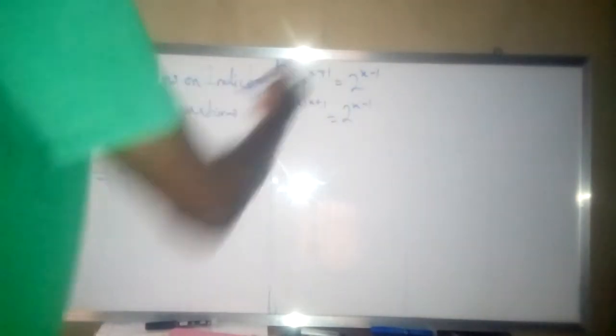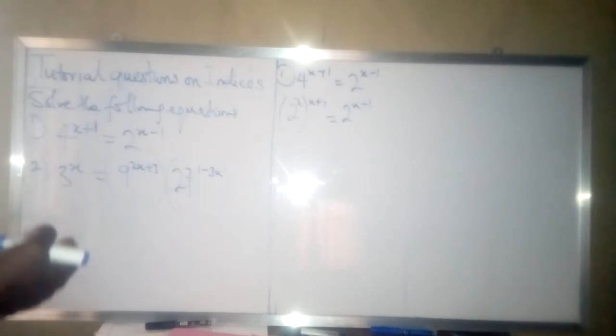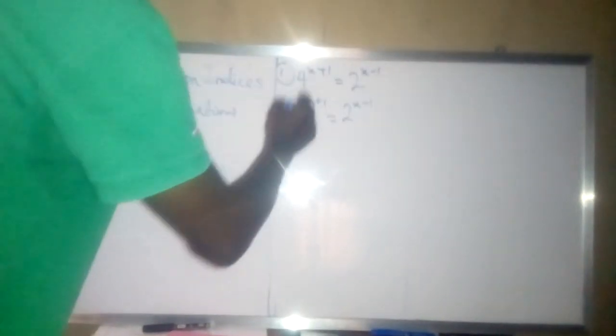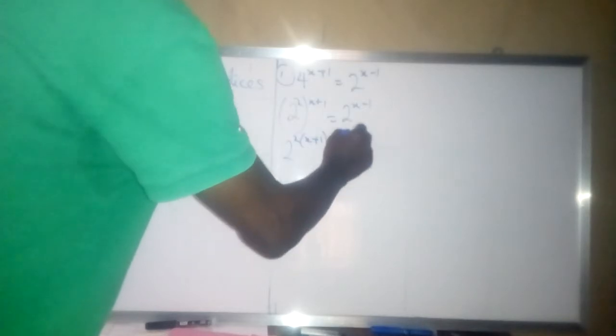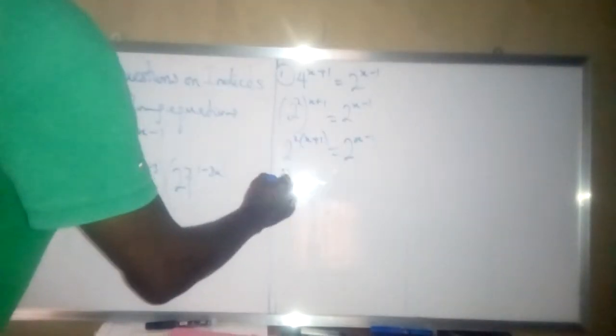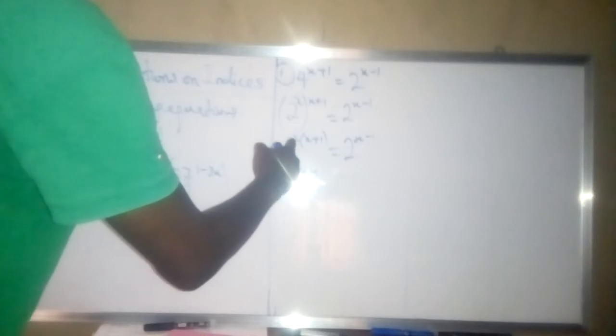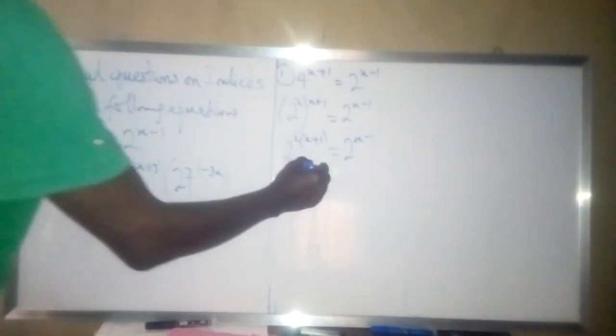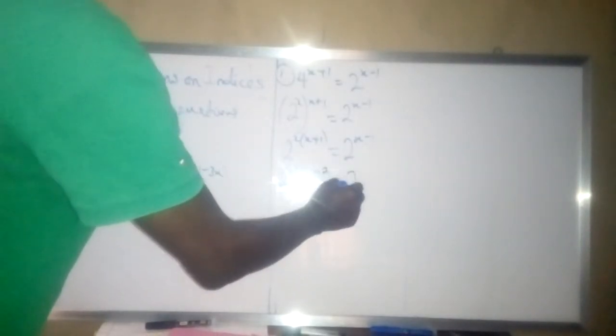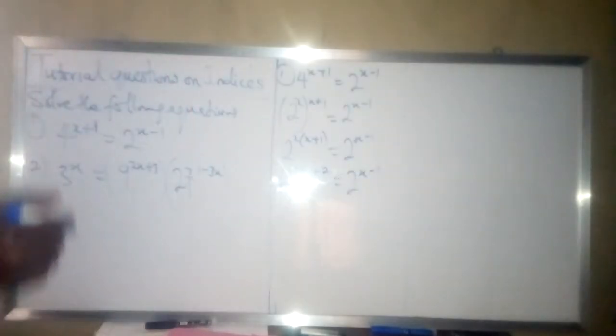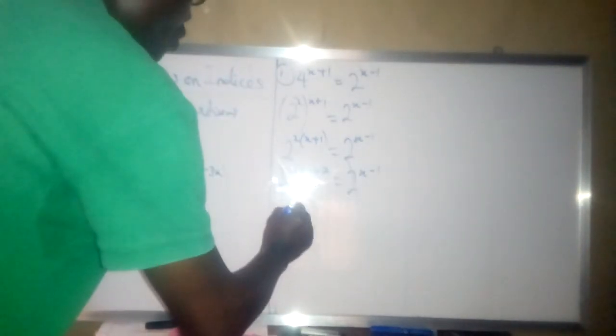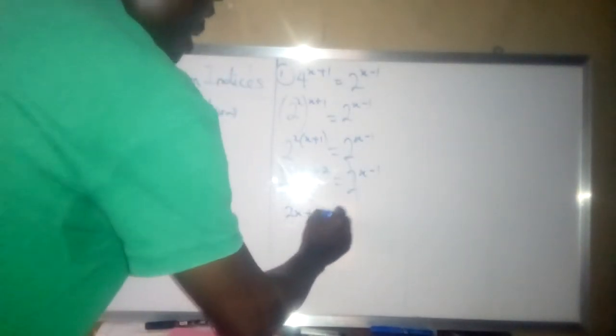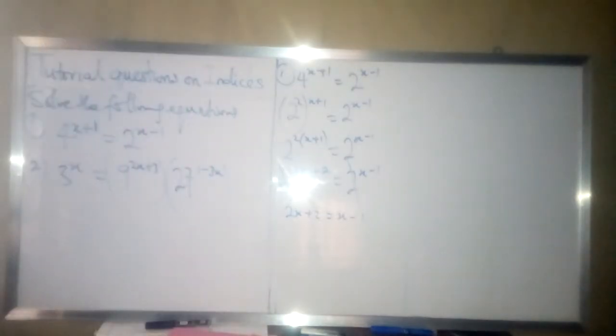So all we need to do now is to expand the bracket in line with our basic rules in indices. So we have 2 raised to power, then 2 multiplied by x plus 1, then is equal to 2 raised to power x minus 1. So now since 2 is common to the two sides of the equation, then we will cancel out the 2 and now equate 2x plus 1 to x minus 1.